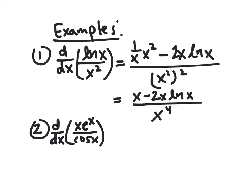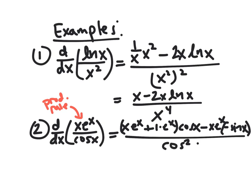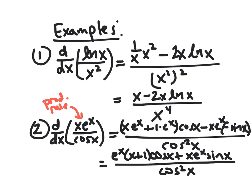Now let's look at xeˣ/cos(x). Notice that taking the derivative of the top requires the product rule since we have a product there. The derivative of xeˣ is x·eˣ + 1·eˣ. So the numerator is (xeˣ + eˣ)·cos(x) — derivative of the top times the bottom — minus xeˣ·(−sin x), the original top times the derivative of the bottom, all over cos²(x). This simplifies: factoring out eˣ gives eˣ(x + 1)·cos(x) + x·eˣ·sin(x), all over cos²(x).